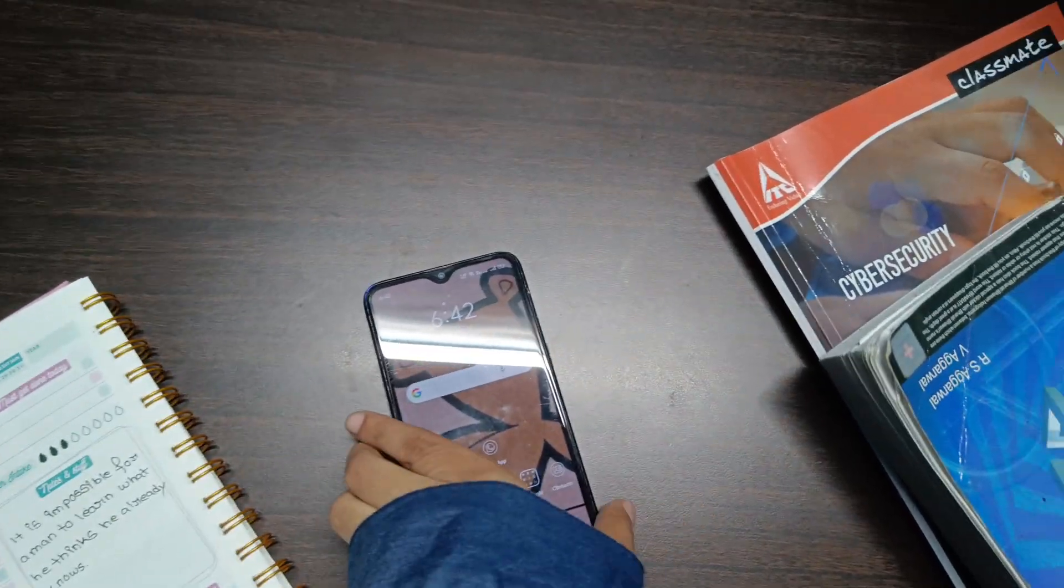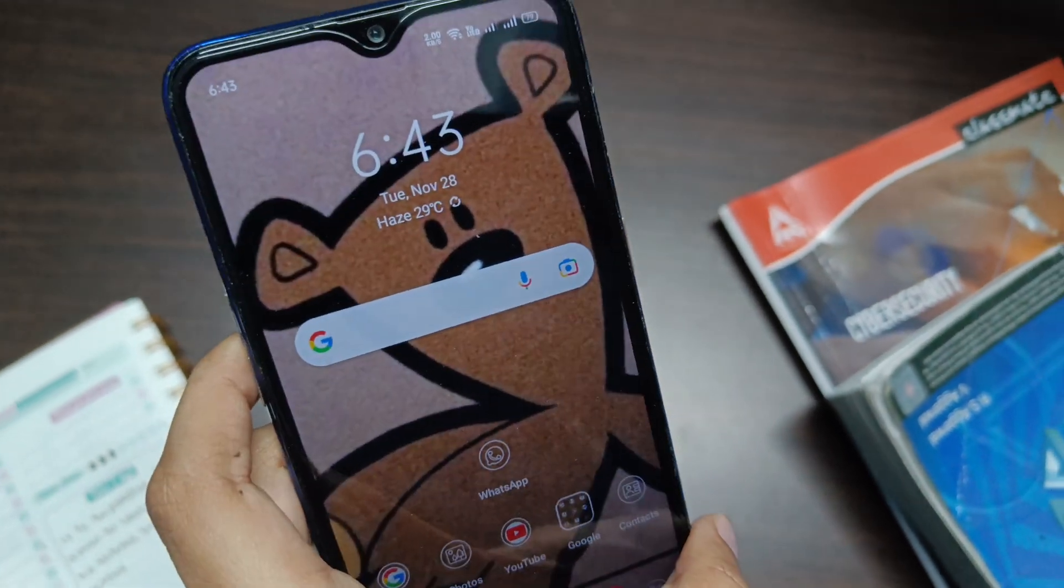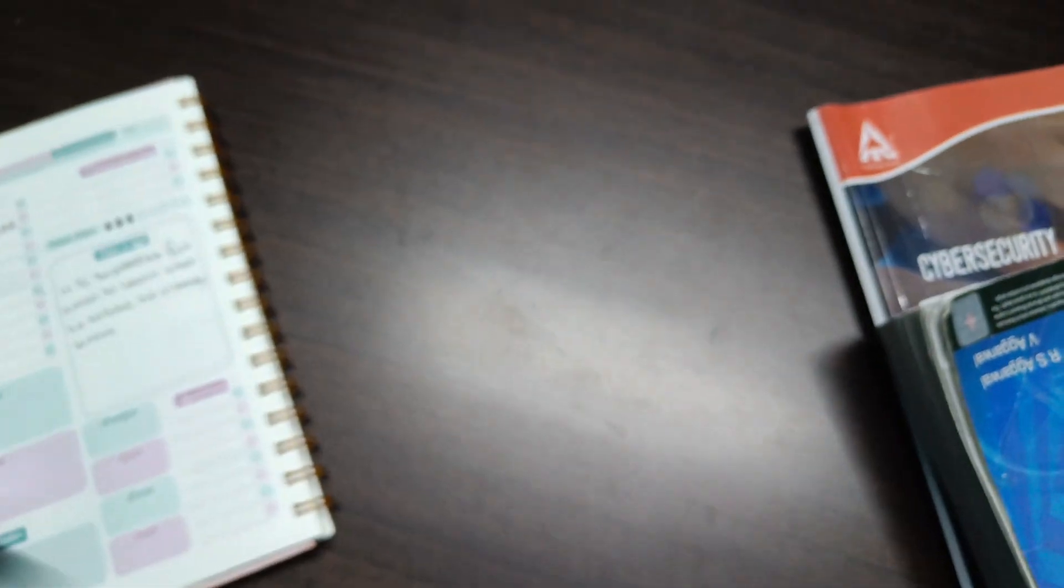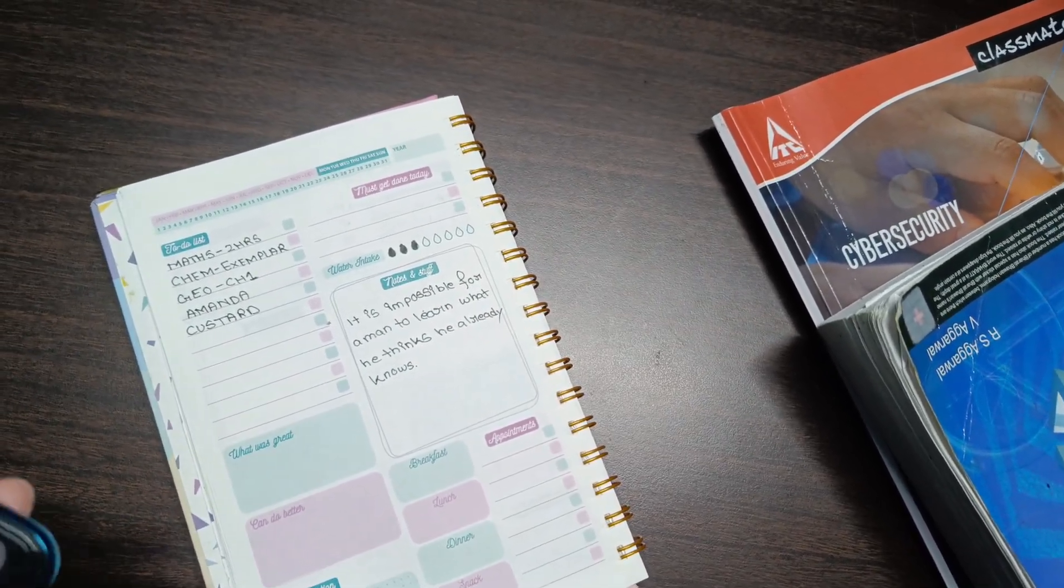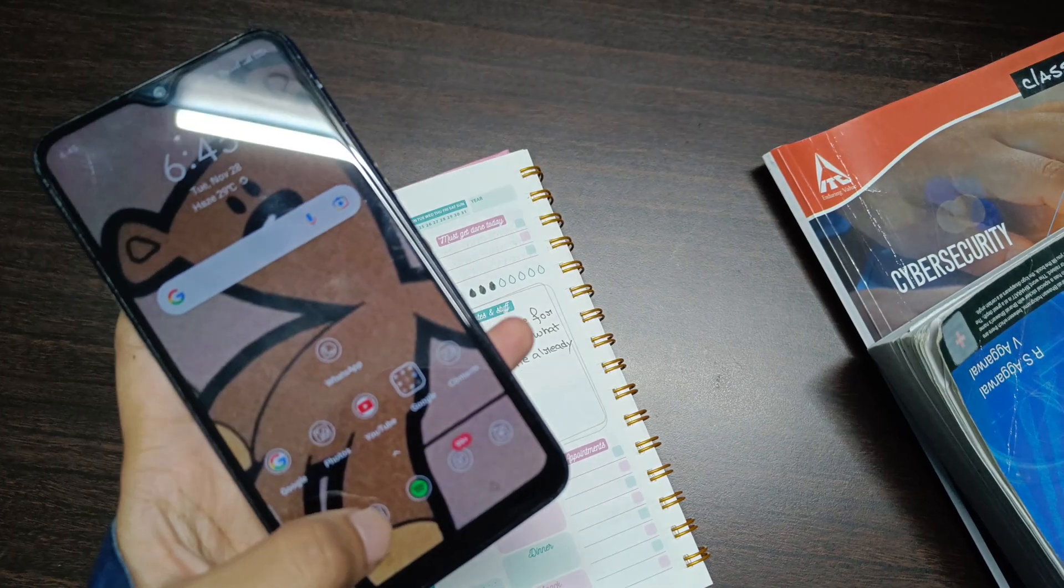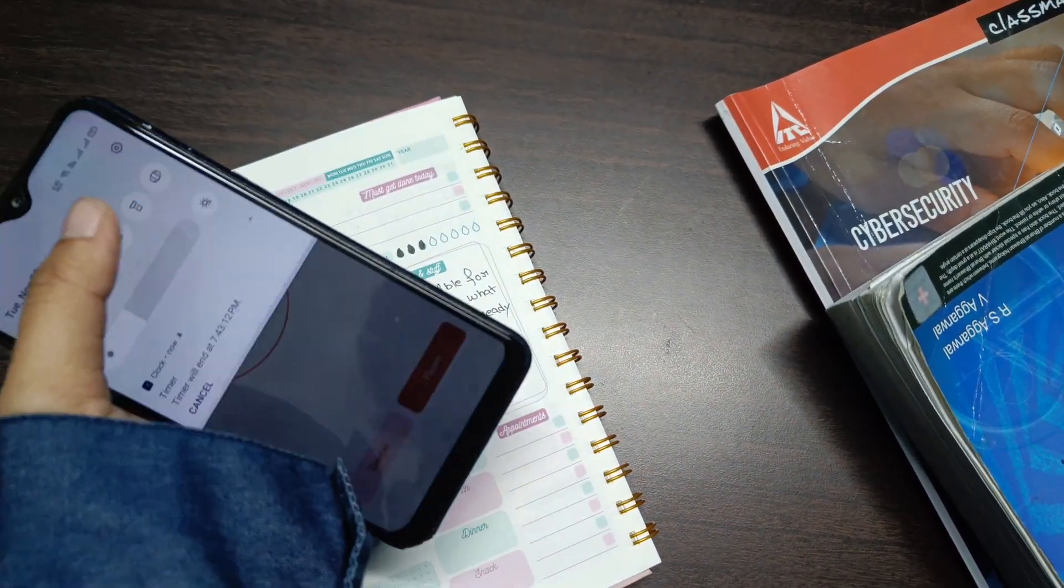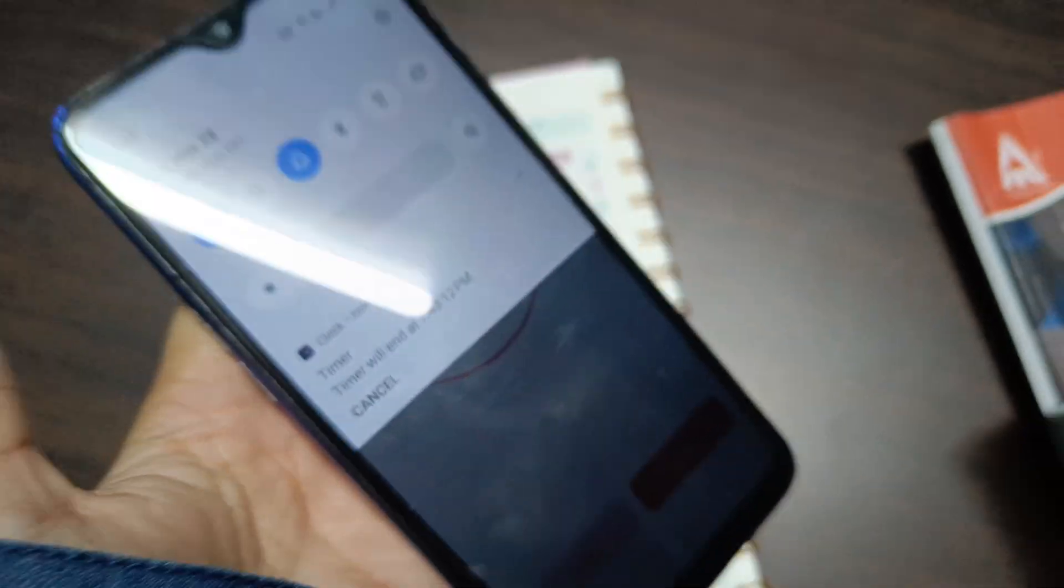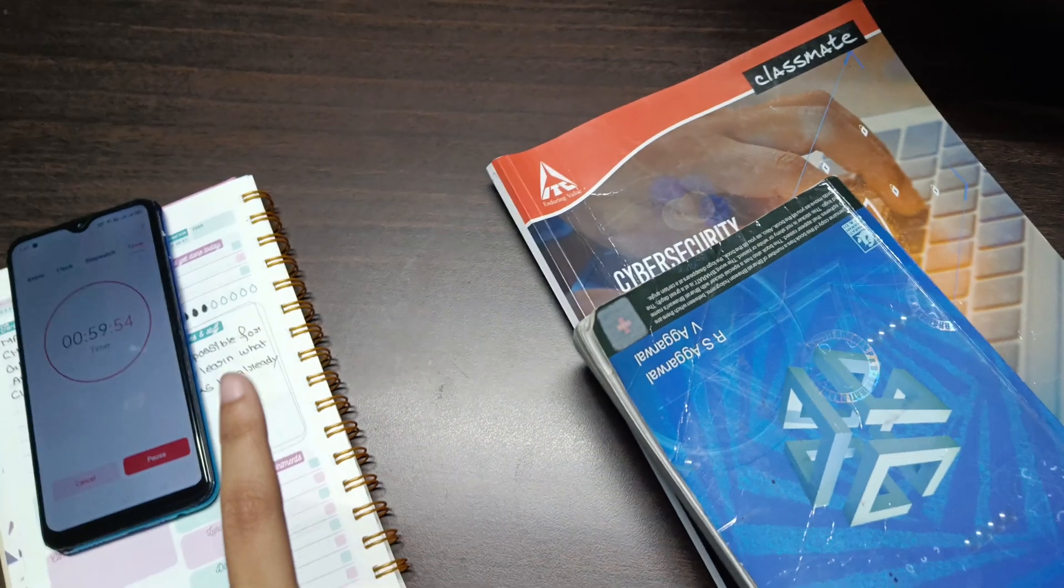Hi everyone, so today is 28th November, Tuesday, and it is currently 6:43. This is my to-do list for today. Right now I will start off with my first study session of mathematics. I'll do mathematics for one hour, so this timer will end at 7:43. Right now I'll start off with trigonometric identities from the book of RS Agarwal.